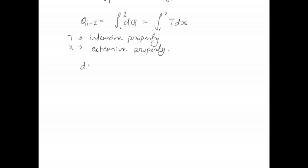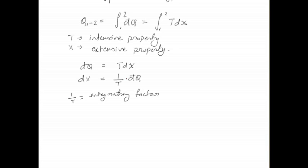We can write dq equal to t dx, so dx equals (1/t) dq. Since dq is an inexact differential, if we multiply dq by 1/t — taking 1/t as the integrating factor — then by multiplying dq with this integrating factor, dq becomes an exact differential.